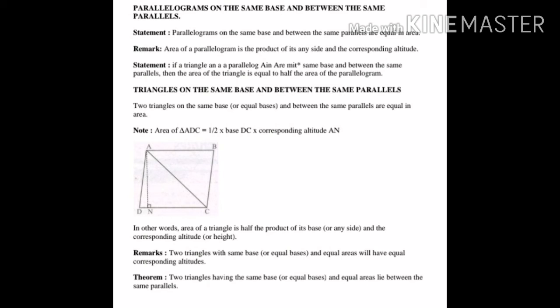Triangles on the same base and between the same parallels are equal in area. اگر دو triangles same base اور same parallels کے بیچ میں ہوں تو دونوں کا area equal ہوگا۔ Note: Area of triangle = ½ × base × corresponding altitude. دھیان رکھیں جس base پر آپ کا altitude یا height لائے کرے گا، اسی کا use ہوگا۔